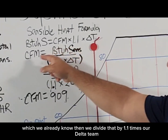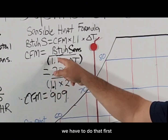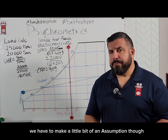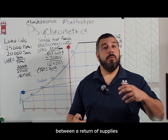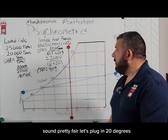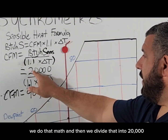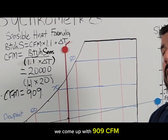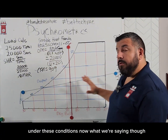Here's what it looks like: CFM equals BTU sensible divided by (1.1 times delta T), and we calculate the denominator first. We need to assume a delta T — 20 degrees is a fair assumption for the temperature drop between return and supply. So we take 1.1 times 20, then divide that into 20,000 BTU sensible, and we come up with 909 CFMs — that is our target CFM for this load calculation under these conditions.